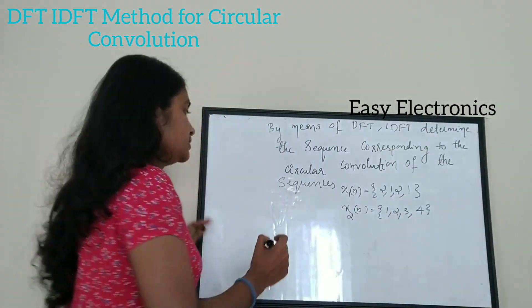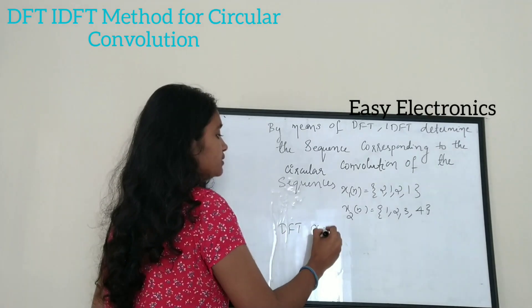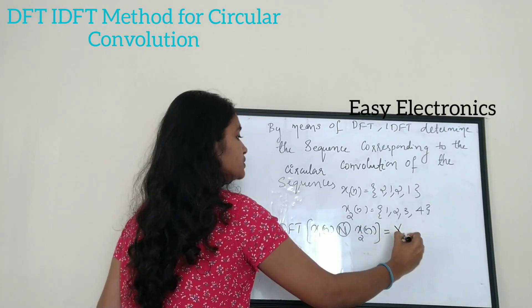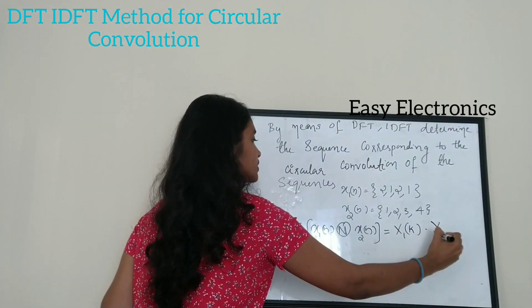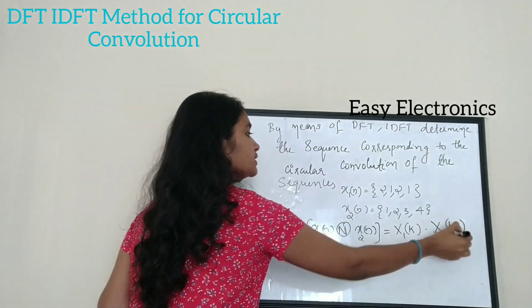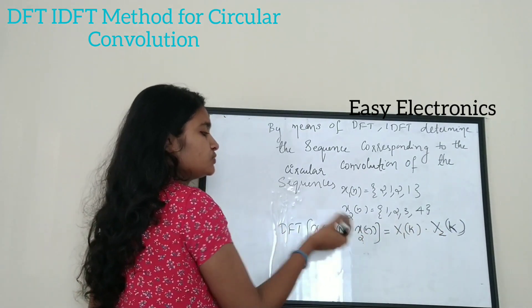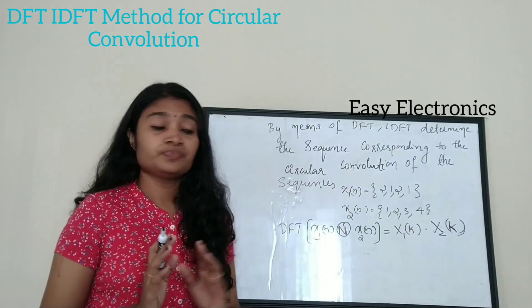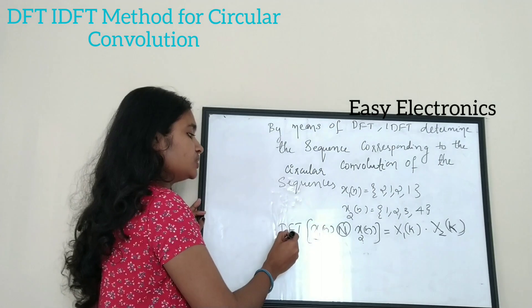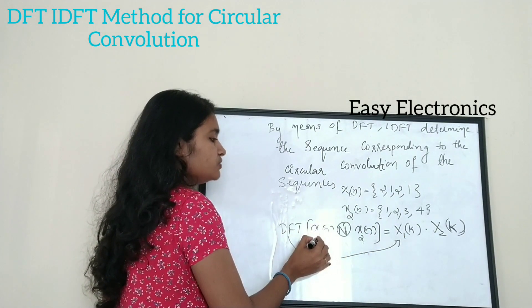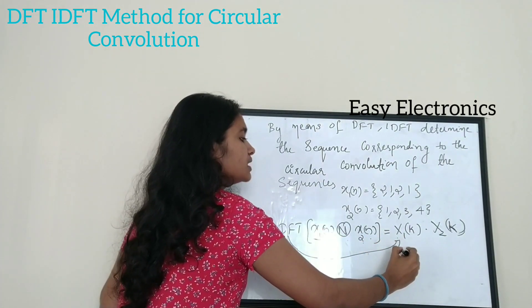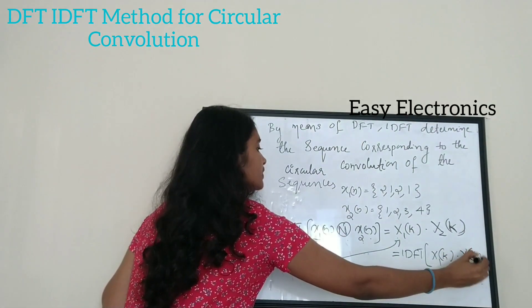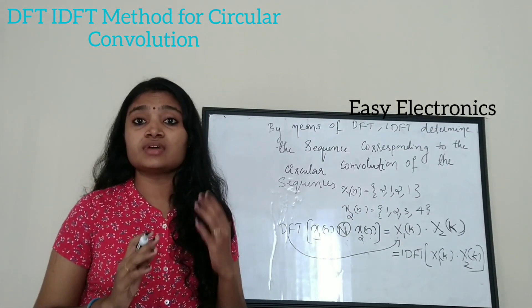The circular convolution property states that the DFT of x1(n) circularly convolved with x2(n) equals X1(k) multiplied by X2(k), where X1(k) is the DFT of x1(n) and X2(k) is the DFT of x2(n). So the circular convolution result is the IDFT of X1(k) · X2(k).